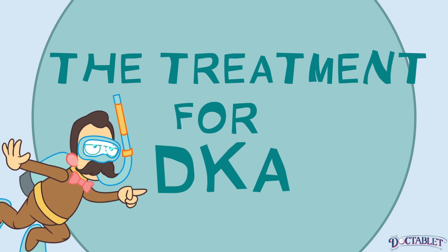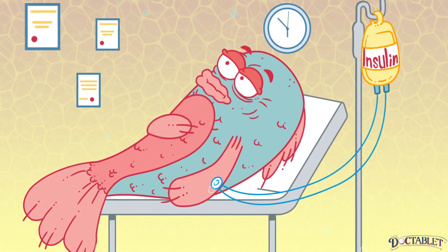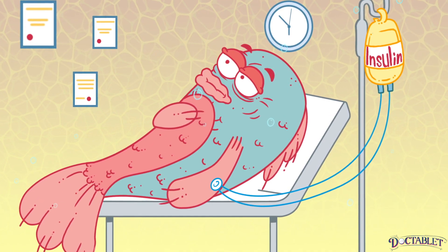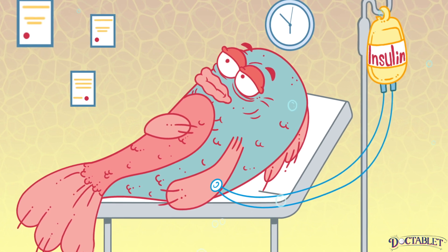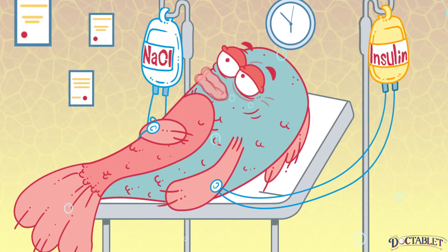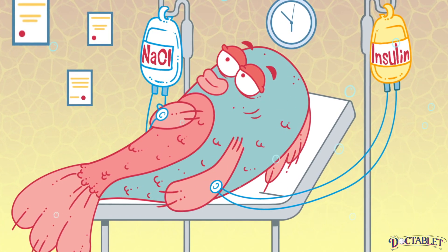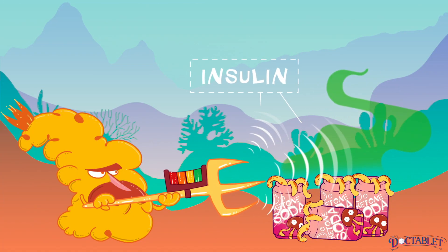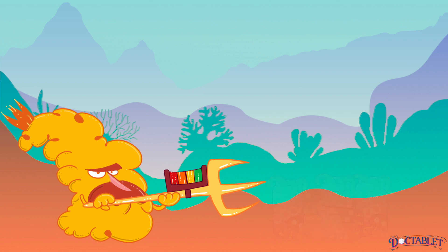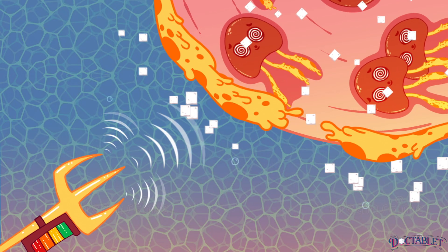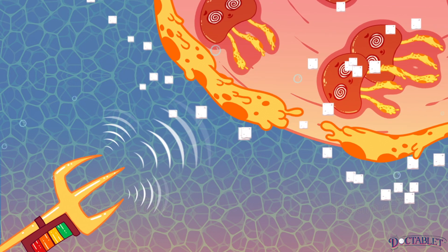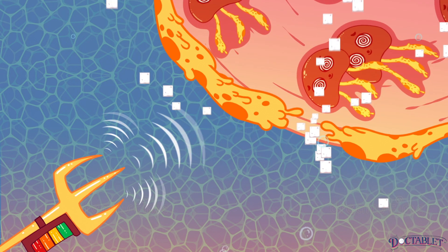The treatment for DKA is to replace what is desperately missing — insulin — in addition to plenty of intravenous fluids to revive the dehydration-injured body and replace missing electrolytes. Insulin is what the body needs to put out the ketoacidotic fire. Insulin is what allows the body to absorb the circulating glucose into the cells for energy so that no further ketones are made.